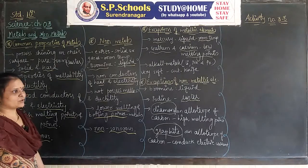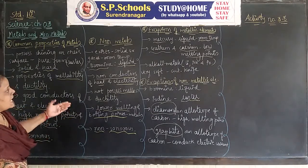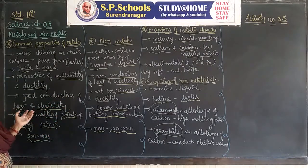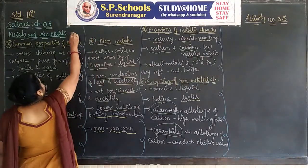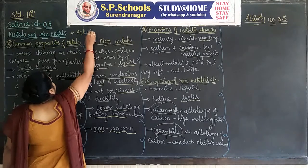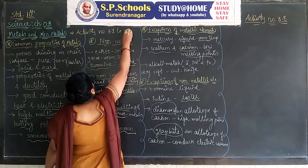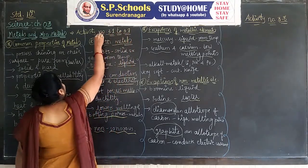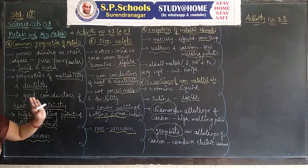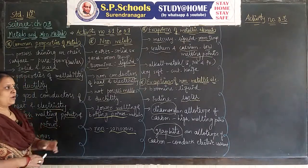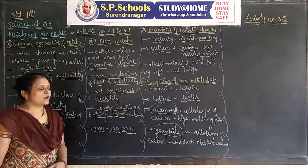When a question arises, you can write the answer in these four parts: common properties of metals, common properties of non-metals, exceptions of metallic elements, and exceptions of non-metallic elements. Before writing these four answers, read activities number 3.1 to 3.7 — you don't need to write them, but read them properly, as they prove these common properties.